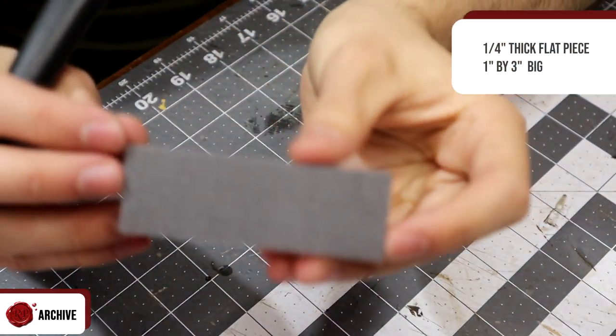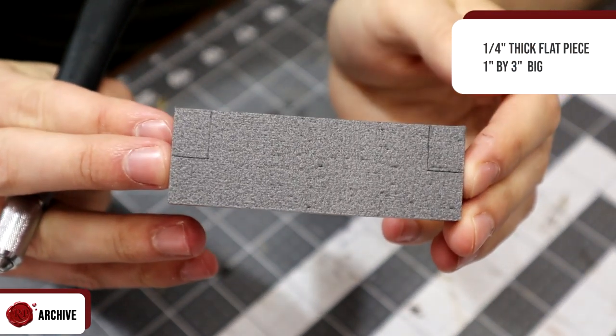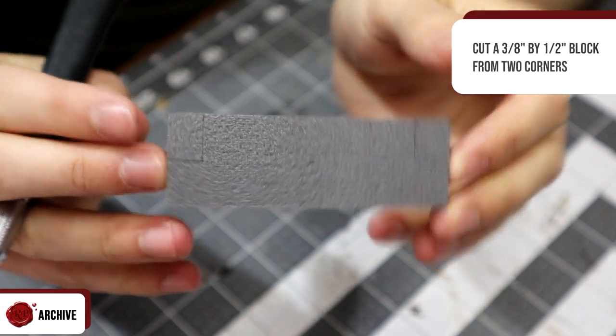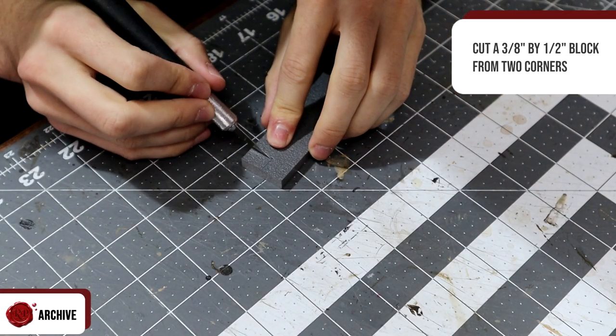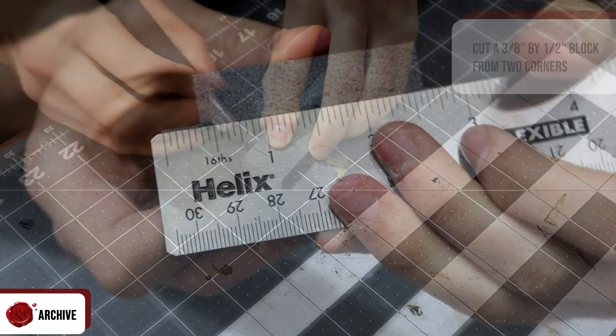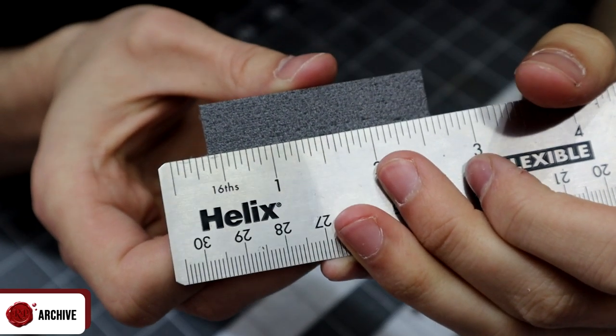We then need a quarter inch thick flat piece, one inch by three inches big. I cut a three eighths of an inch by one half an inch block out of the corner of that piece on each side and hot glued it to the top. This meant that it would line up with the rest of the structure.